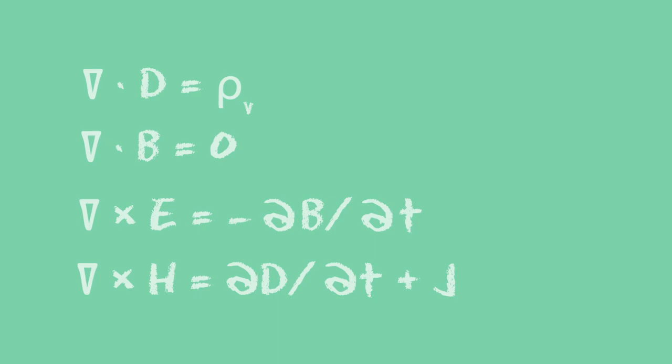The second equation learns that in nature no separate north and south poles exist. A bar magnet that is broken in two halves will give two magnets, each having a north and a south pole.